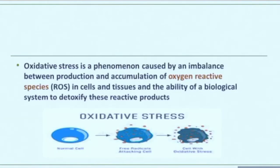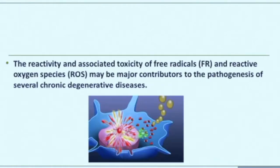Oxidative stress is an imbalance between production and accumulation of oxygen reactive species in cells and tissues. These oxidative stresses have the ability to damage cells, proteins, and DNA, and can contribute to aging.